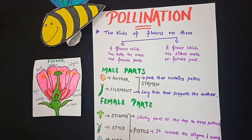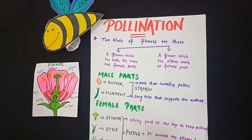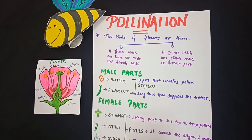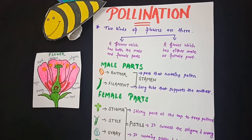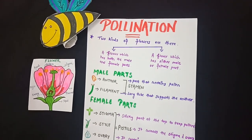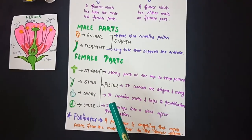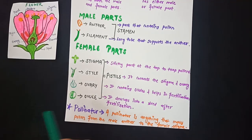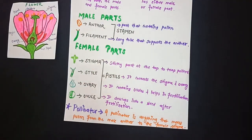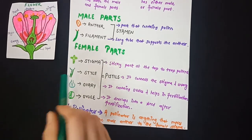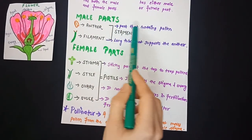Now, wondering about the female and male parts of a flower? Just as human beings have different male and female parts, plants also have different parts — male ones are different and female ones are different. Let's learn more about this whole pollination topic. Let's begin with the male parts.